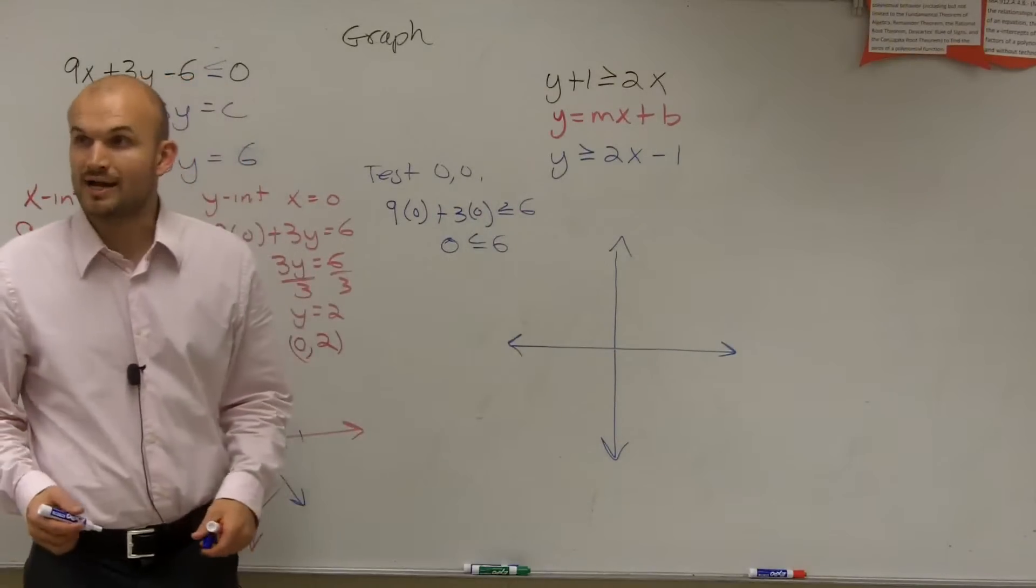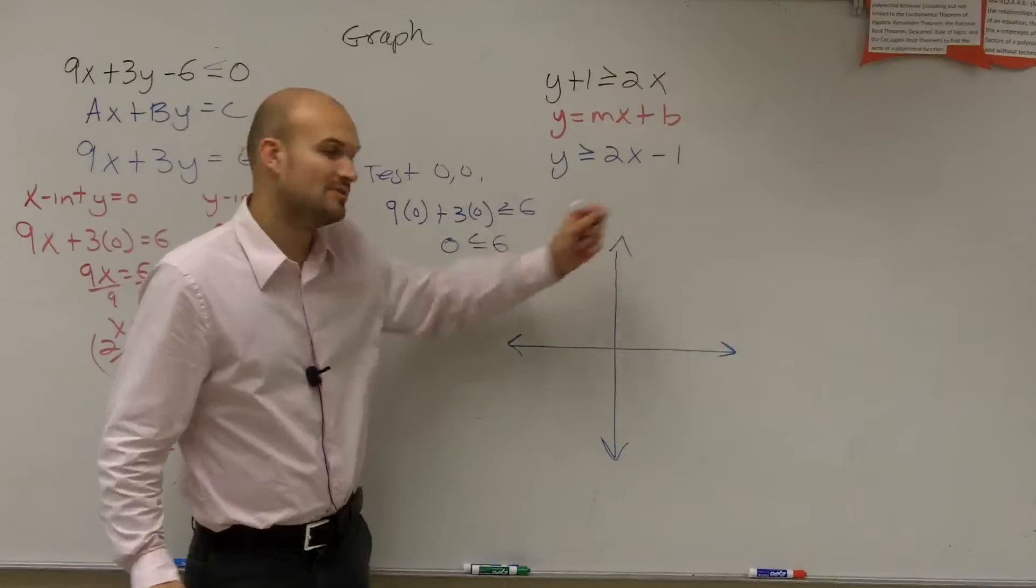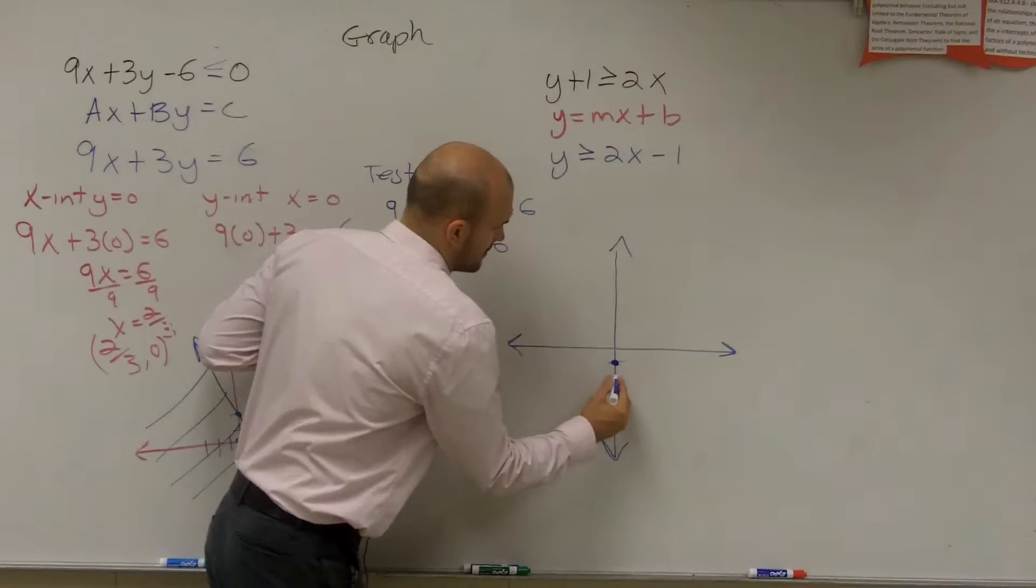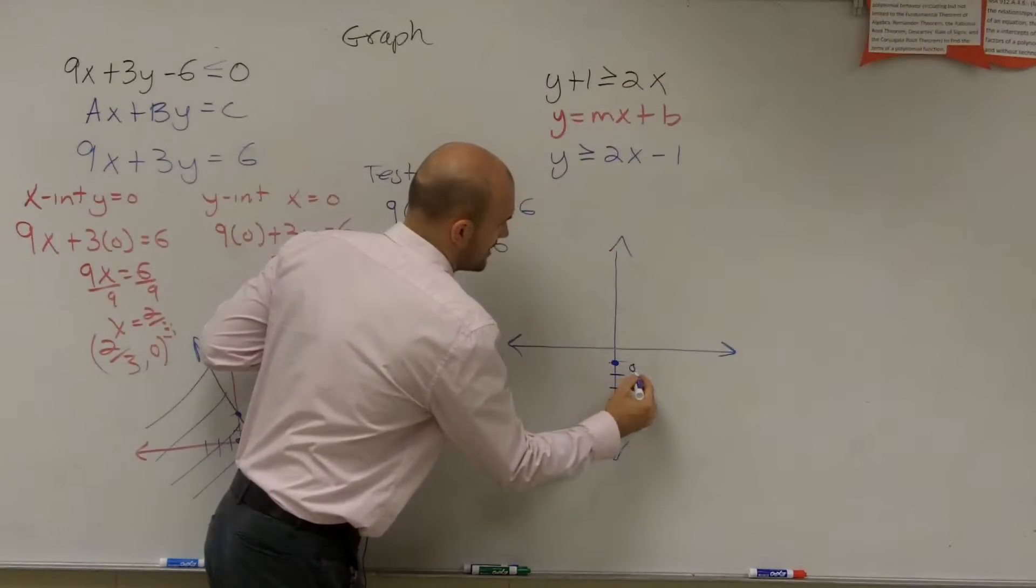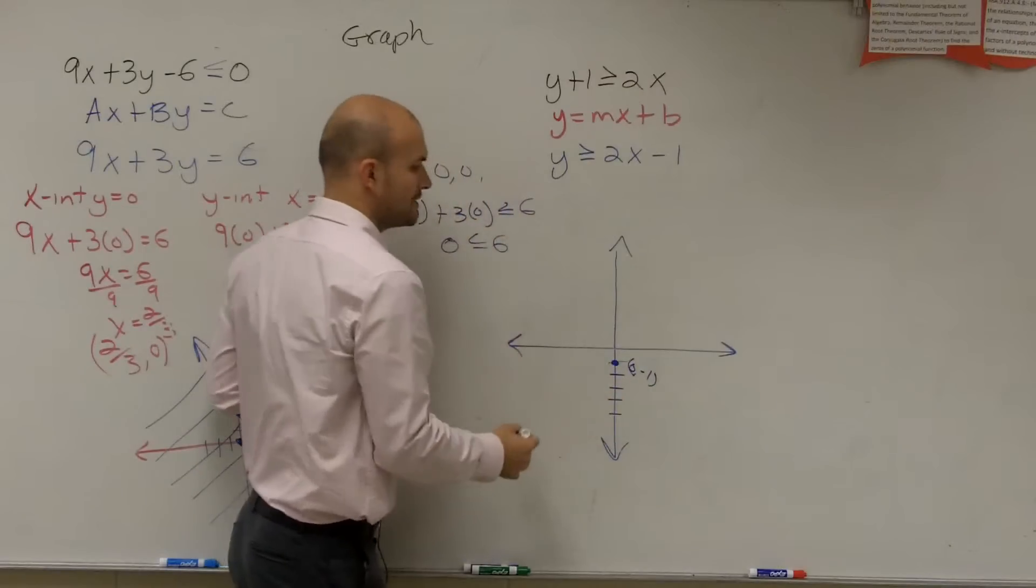the first thing you do is determine the y-intercept. The y-intercept is your b, which is at negative 1. Zero, negative 1. That's your y-intercept.